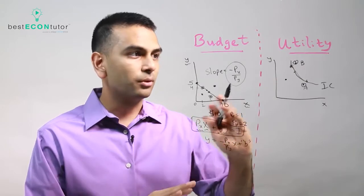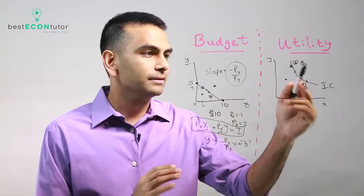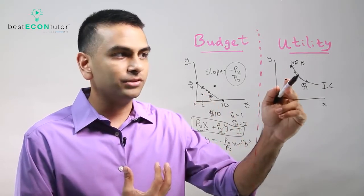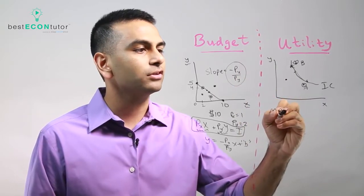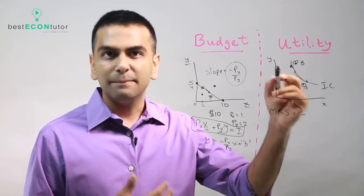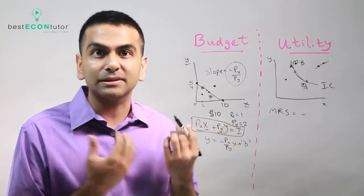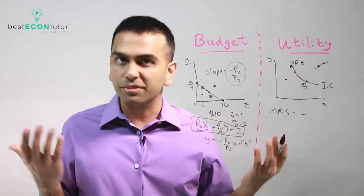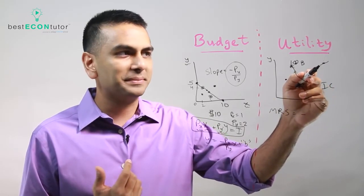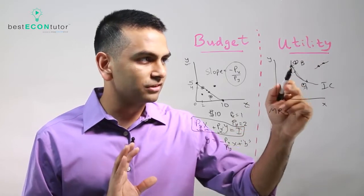You can use indifference curves to figure out which points are better than others even when it's not immediately clear. The slope of the indifference curve is called the MRS — marginal rate of substitution. Notice that indifference curves always have to have a negative slope. If an indifference curve sloped upward, it would imply you're indifferent between a point and another point with more of both goods — which doesn't make sense, because you'd always prefer more. So indifference curves must slope downward.